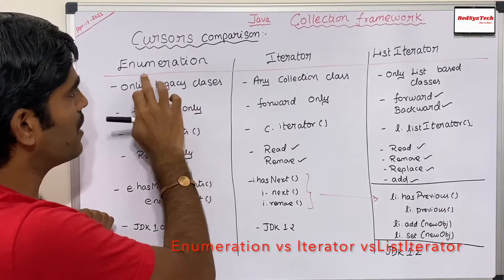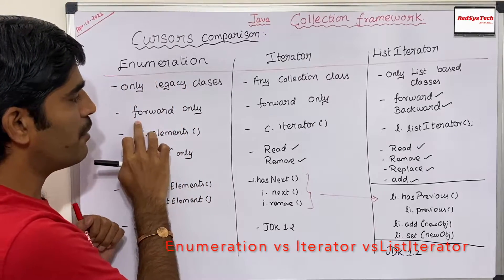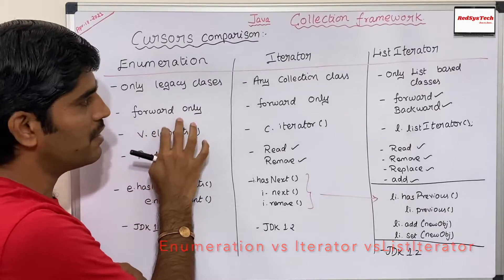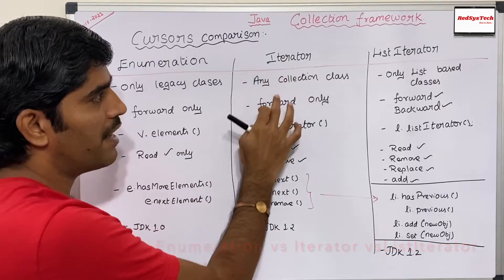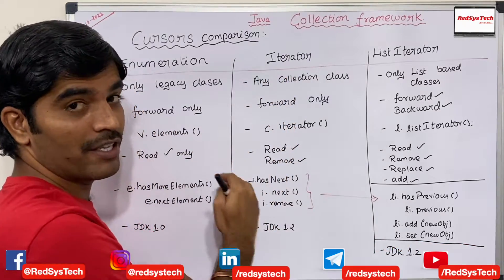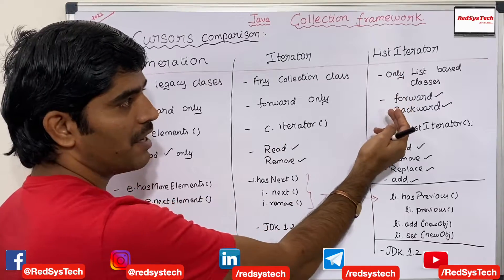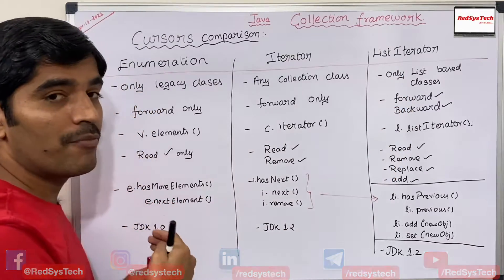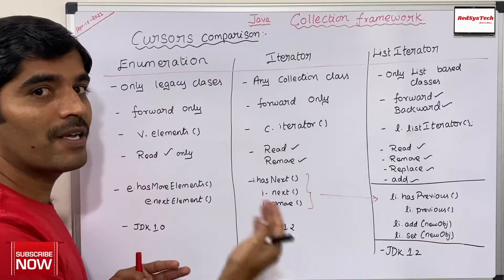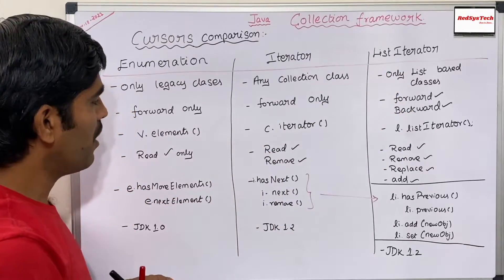If you think about Enumeration, it can be used only to navigate in the forward direction. Similarly, Iterator can also be used to navigate only in the forward direction. But in the case of ListIterator, we can navigate either forward as well as in the backward direction. That is the beauty of ListIterator.